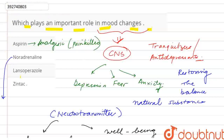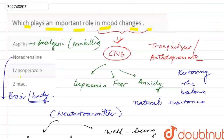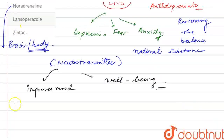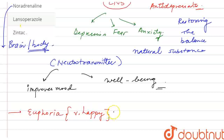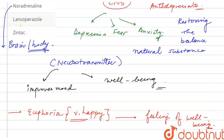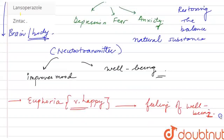Next is Noradrenaline. We also call it norepinephrine, and it belongs to the catechol family, which acts as both a hormone and a neurotransmitter. It acts in our central nervous system. When noradrenaline is involved, it causes euphoria — a feeling of being very happy and a feeling of well-being — and this automatically causes a mood change.